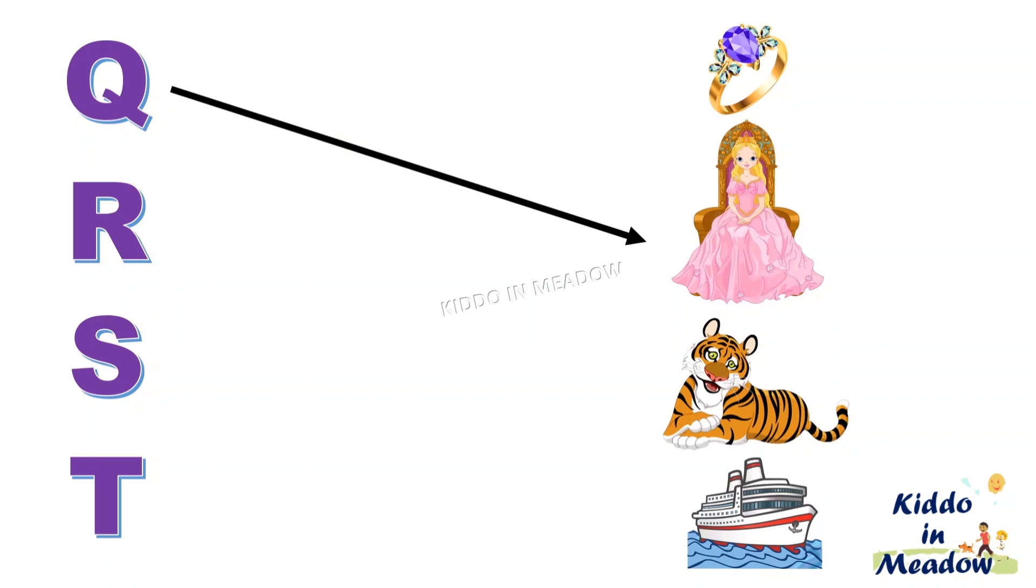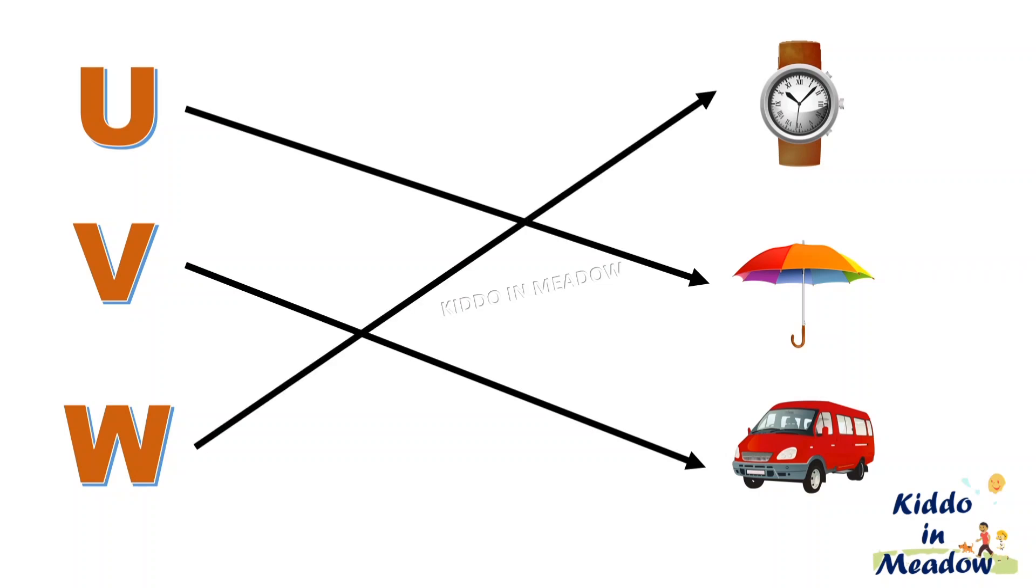Q for Queen, R for Ring, S for Ship, T for Tiger, U for Umbrella, V for Van, W for Watch.